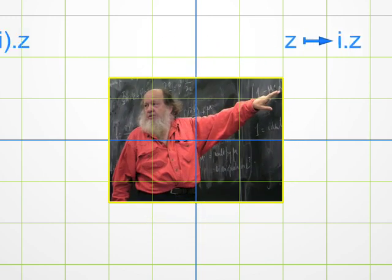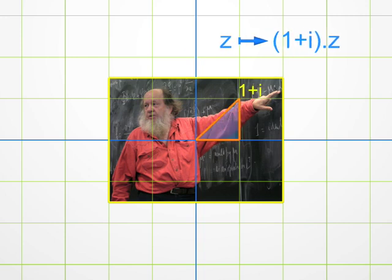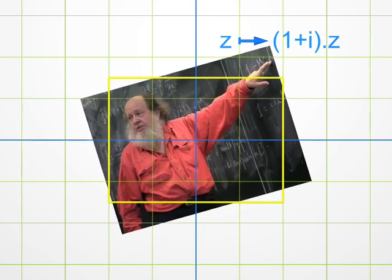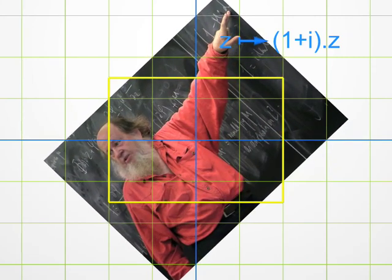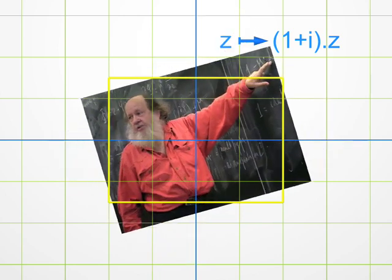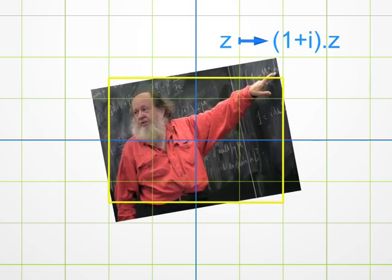Well, a bit more complicated. Multiplication by 1 plus i. Look at the complex number 1 plus i. It corresponds to the point with abscissa 1 and ordinate 1. Its argument is 45 degrees, and its modulus is the square root of 2, using Pythagoras' theorem. Hence, a multiplication by 1 plus i amounts first to multiplying the modulus by the square root of 2, and then to adding 45 degrees to the argument. In simple words, one has to combine a homothety and a rotation. This is called a similarity.